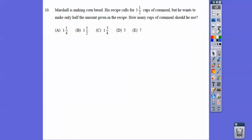Marshall is making cornbread. His recipe calls for three-and-a-half cups of cornbread, but he wants to make only half the amount given in the recipe. So how many cups? So we're going to divide this by two. So dividing by two is the same as multiplying by a half. Remember, we keep, we change this to a multiply, and we flip. Keep, change, flip. So 7 times 1 is 7, 2 times 2 is 4. 7 fourths is 1 and 3 fourths, choice C.